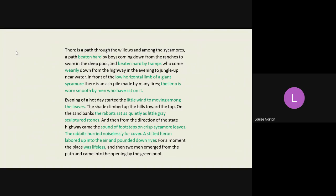So having a look at the extract, I've highlighted some of the features in green that you might like to look at. So we have the phrase beaten hard, repeated. We have the word wearily. We have the lovely descriptive phrase, low horizontal limb of a giant sycamore. And the fact that the limb is worn smooth by the men who have sat on it. The little wind to moving along among the leaves. And the rabbit sat as quietly as little grey sculptured stones. The sound of footsteps, crisp sycamore leaves. The rabbits hurried noiselessly for cover. Stilted heron laboured up into the air and pounded down river. The place was lifeless.